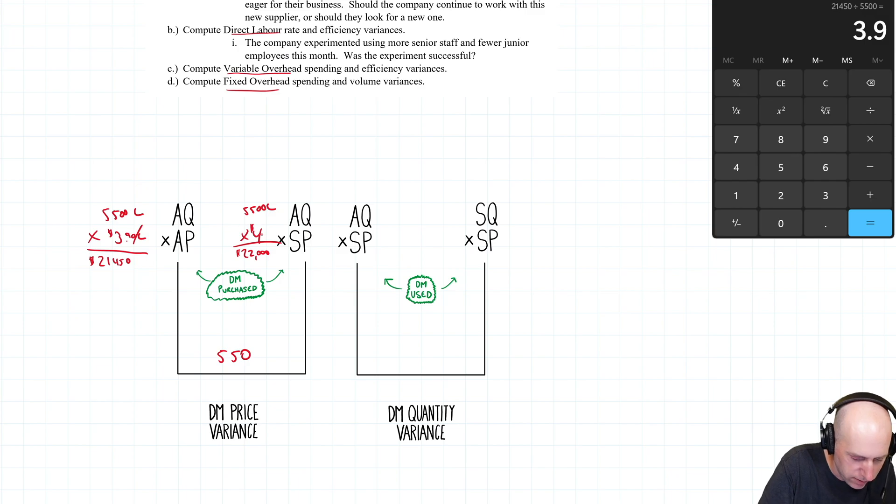So comparing the two, we're $550 apart. That's the difference, that is the variance. Is it a good variance or a bad variance, is it a favorable variance or an unfavorable variance? And the answer is, compare what's different: the 4 and the 3.9. I'm expecting to pay $4 a liter, I only paid $3.90 per liter. I saved some money. This is favorable.